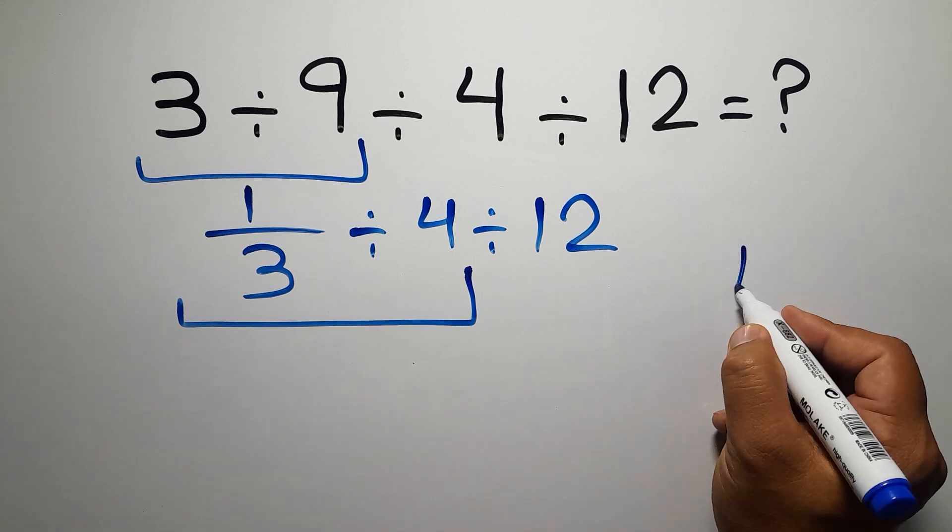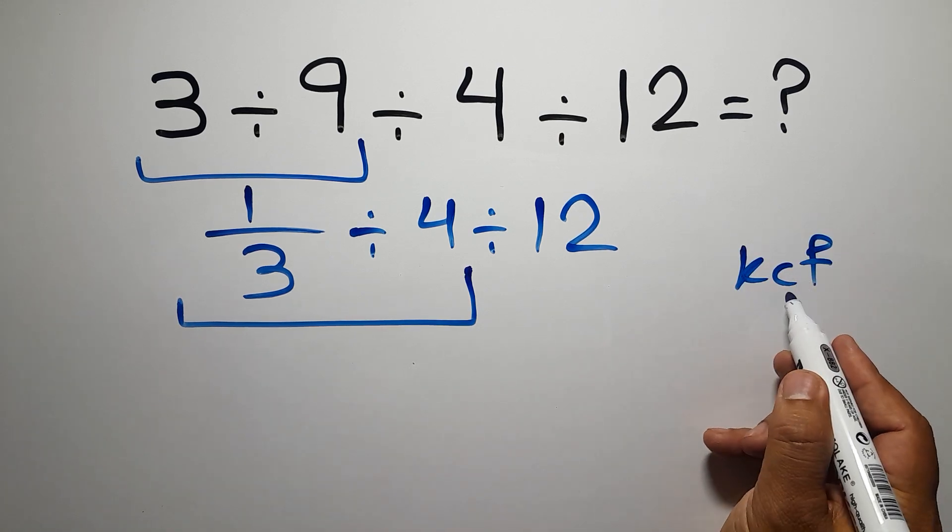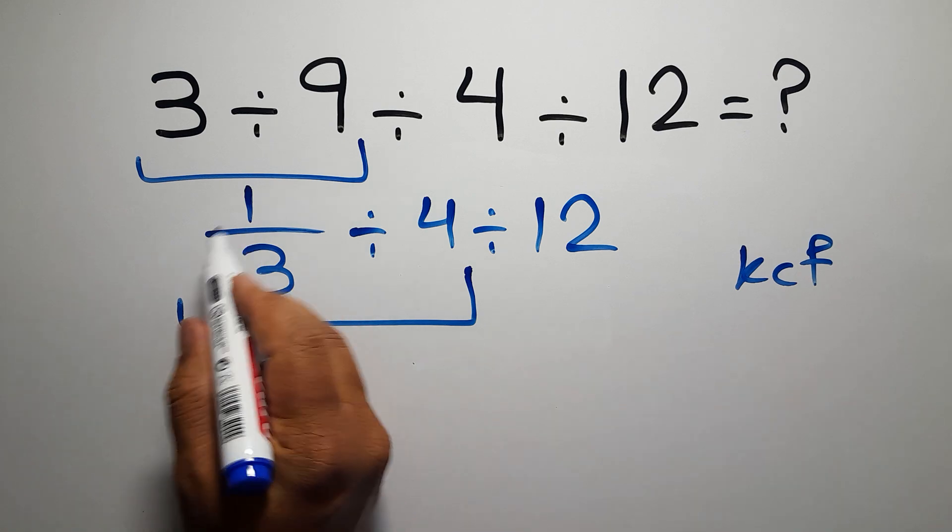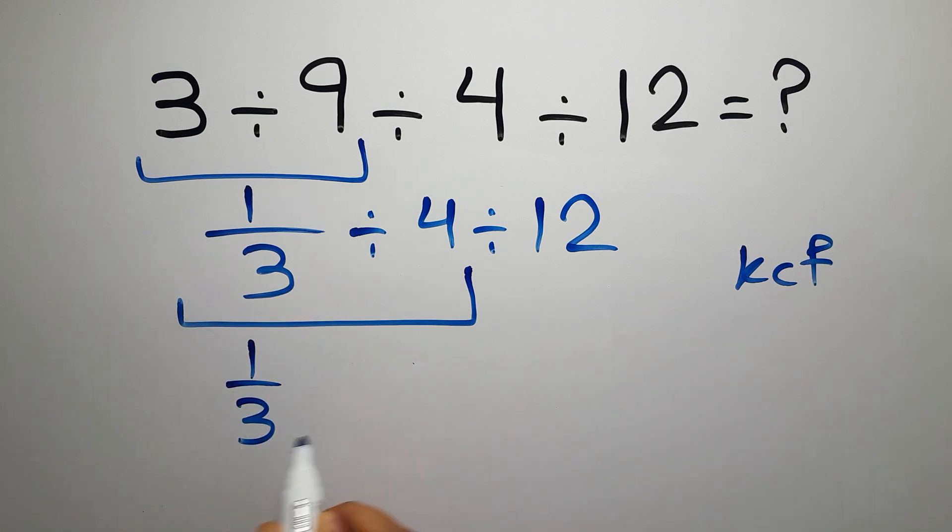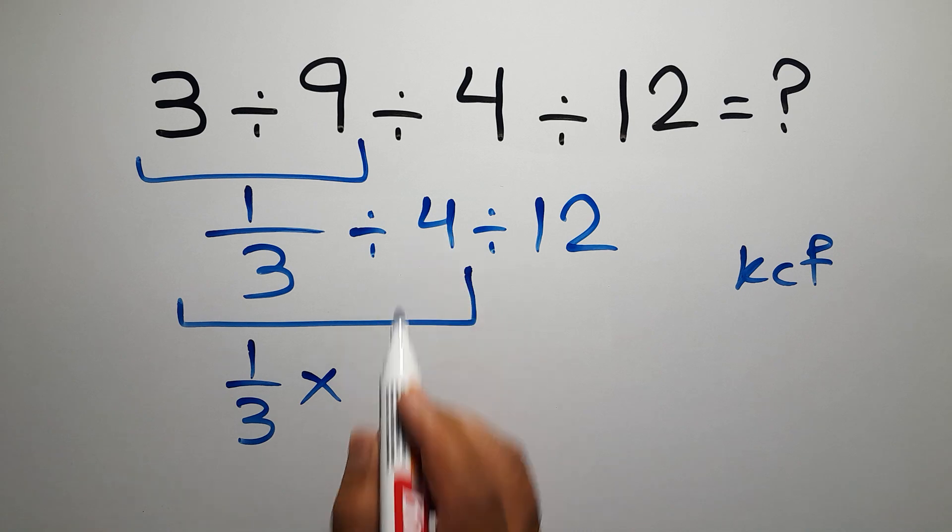According to the KCF rule, K stands for keep, C stands for change, and F stands for flip. Keep the first fraction, change division to multiplication, and flip the second fraction to 1 over 4.